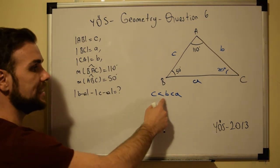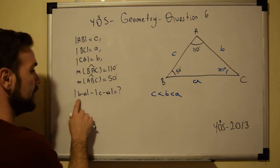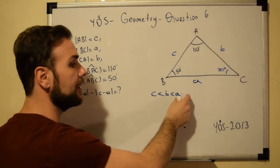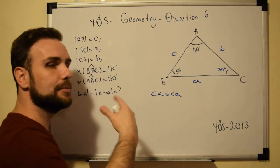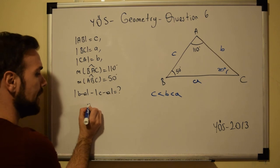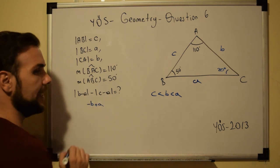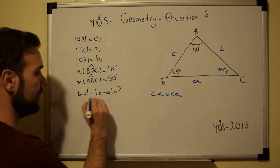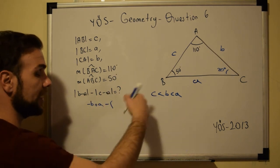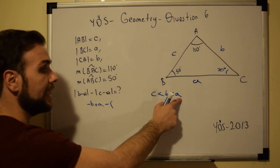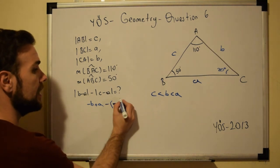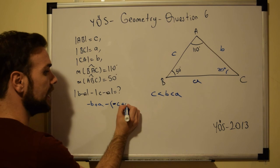So we have c < b < a. For the absolute value |b - a|: since b is smaller than a, subtracting gives a negative number, so |b - a| = -b + a. Applying the same logic to |c - a|: since c is less than a, |c - a| = -c + a.